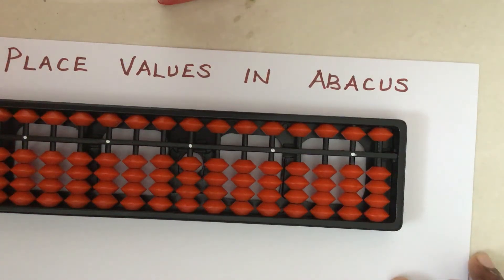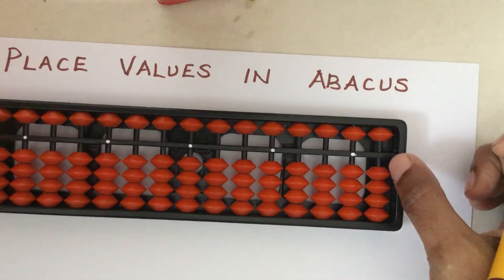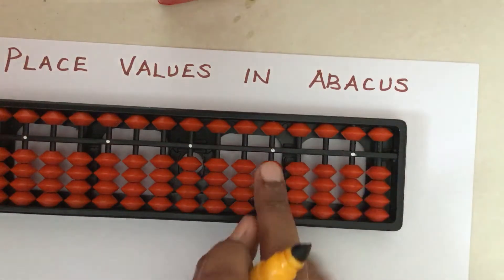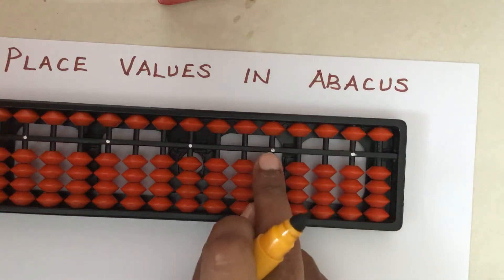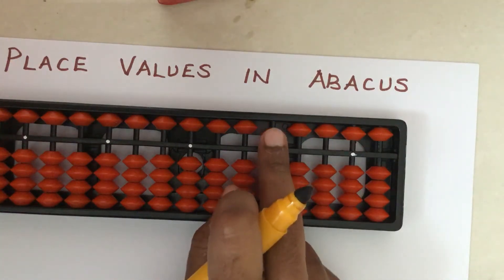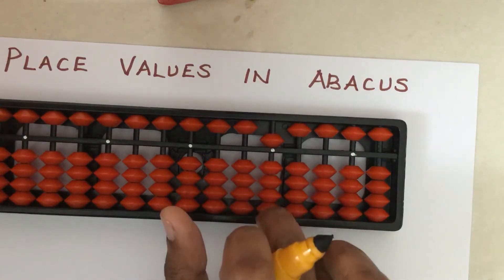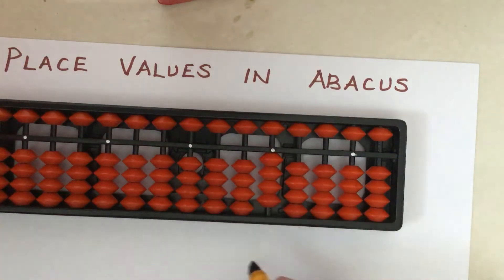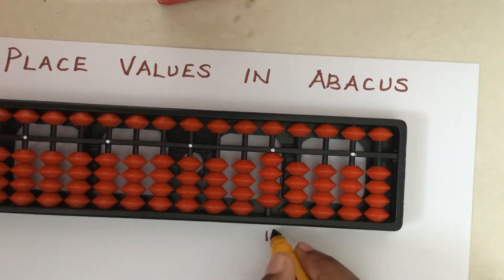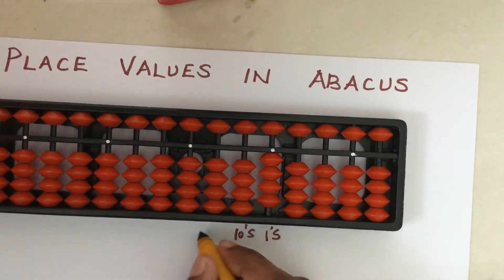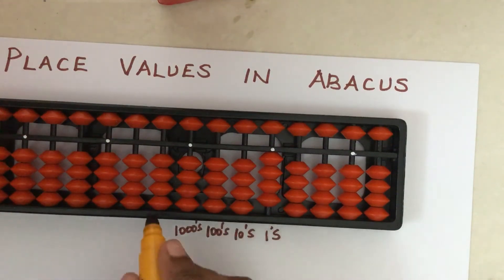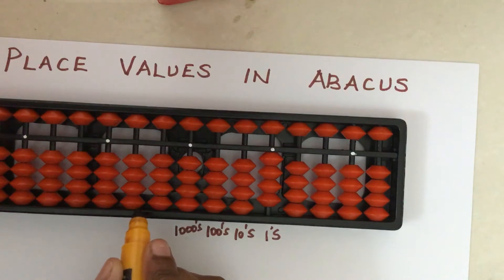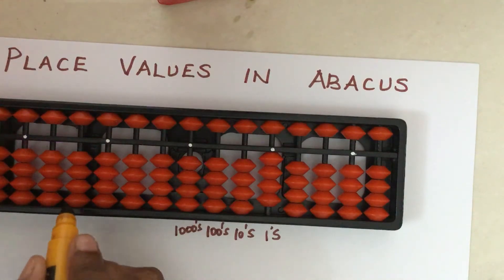In abacus, we are going to see the different places. Always in abacus, start from the second white dot — leave the first white dot and go to the second white dot. This rod is the ones place rod. This is the tens place, this is the hundreds place, this is the thousands, ten thousands, one lakh, ten lakh, one crore, and it goes on.